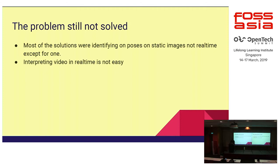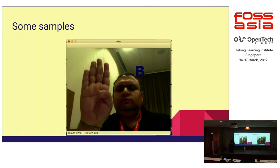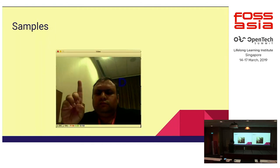If you try to put OpenCV and do a network analysis in real time, just see the FPS rate — how badly it drops. So we had to look into certain other solutions like threading to be able to get this to work. Finally, luckily in January this year we managed to get some breakthrough. We are now able to identify — this is a short demo I just took sitting here — B, D and many other alphabets.